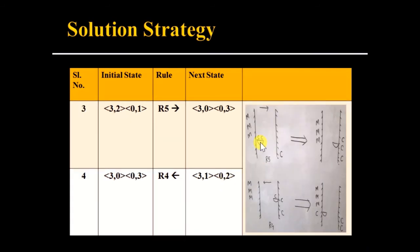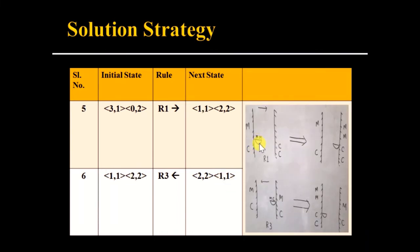Again we apply Rule 5, moving two cannibals from riverside one to riverside two. The next state is three missionaries on riverside one and three cannibals on riverside two. Then applying Rule 5 in reverse, we get three missionaries and one cannibal on riverside one and two cannibals on riverside two. Next, applying Rule 1, we move two missionaries from riverside one to riverside two, giving one missionary and one cannibal on riverside one and two missionaries and two cannibals on riverside two.